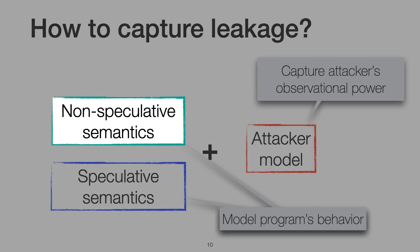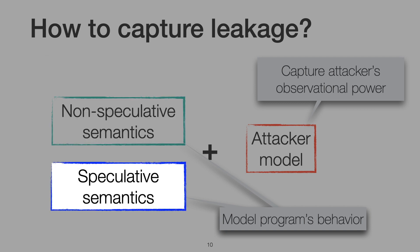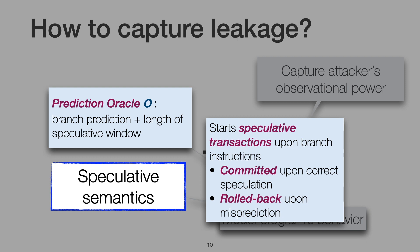Let's look at the details. First, the non-speculative semantics is standard: instructions are executed in order one after the other. In contrast, the speculative semantics is novel and captures the effects of speculative execution. Concretely, the semantics is parametric in a prediction oracle which abstracts away from specific branch prediction details. Whenever we execute a branch instruction, the semantics queries the oracle which produces the prediction and the corresponding speculative window — that is, the number of steps that we should execute speculatively.